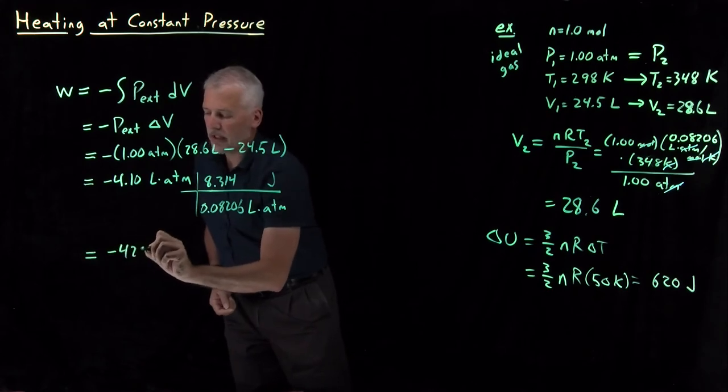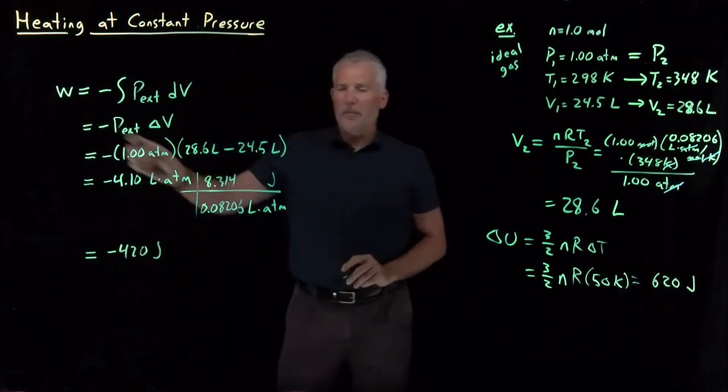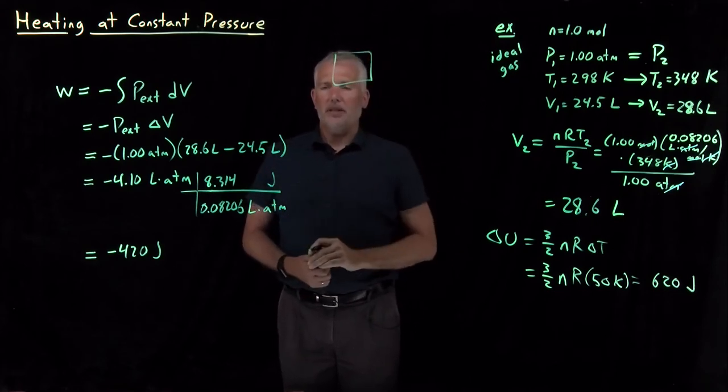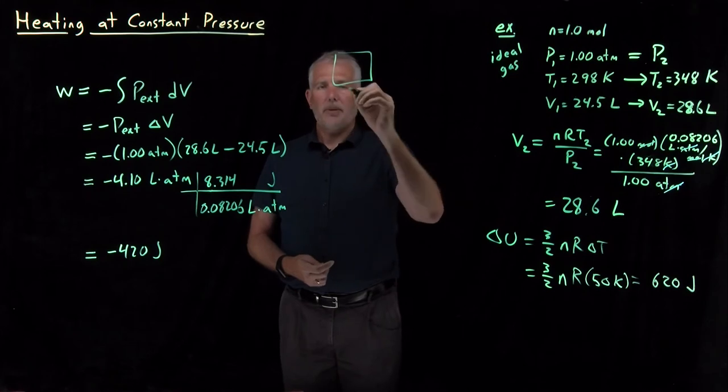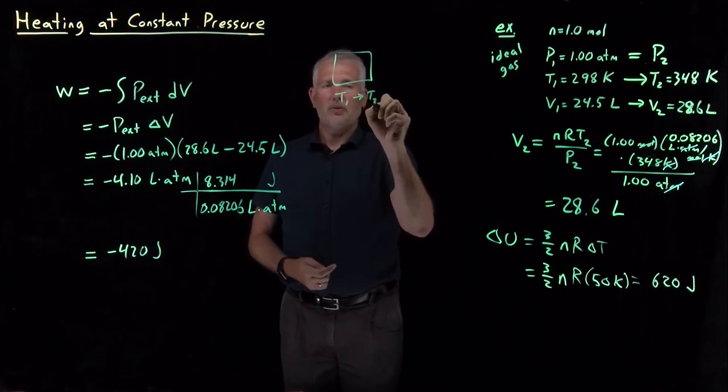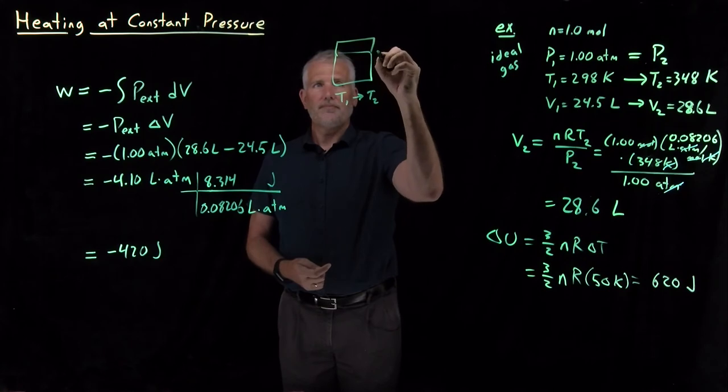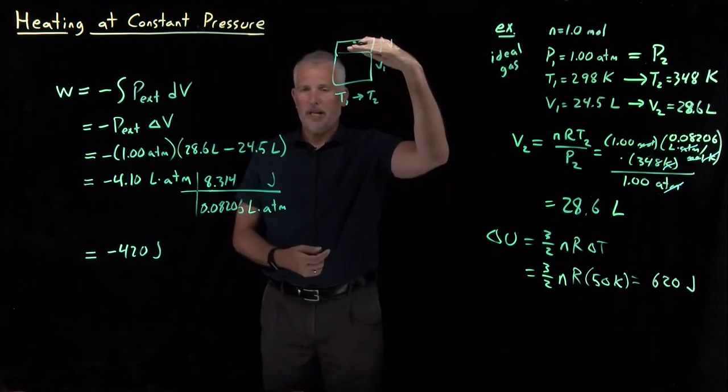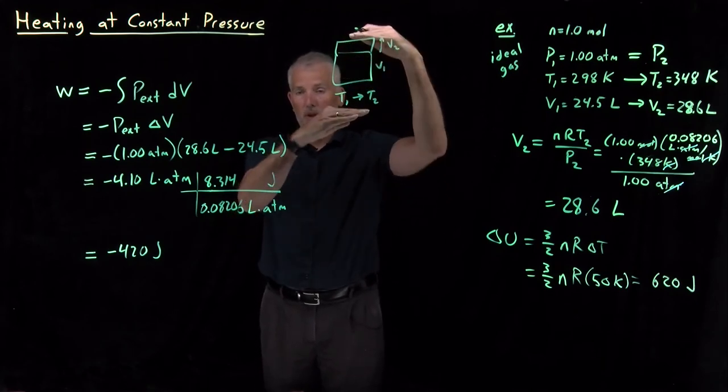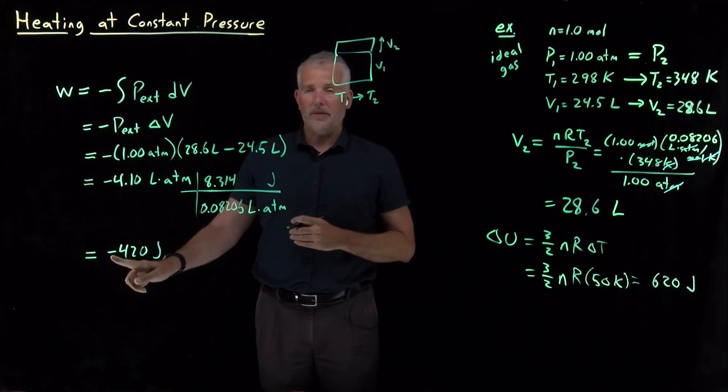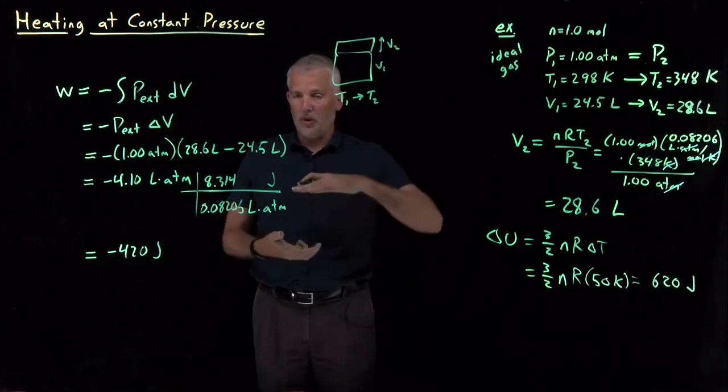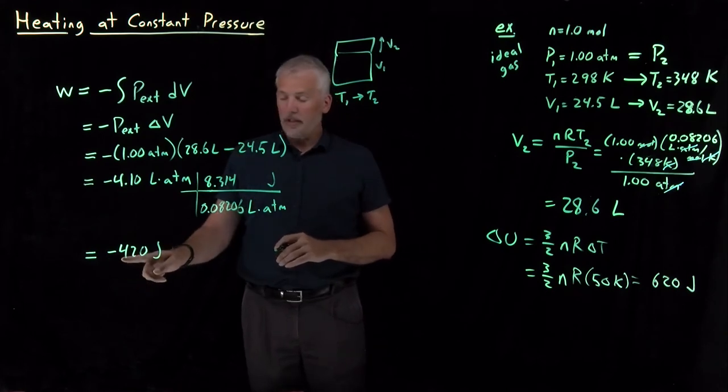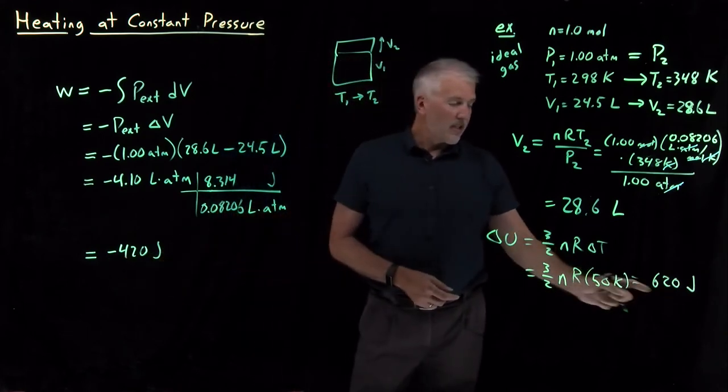Notice what's happening. I've got my box of gas. By keeping the pressure constant as I increase it from T₁ to T₂, the volume increases from V₁ to V₂. In the process of changing the volume, it has to do some work—the system does some work by expanding. So the work has a negative sign, and it does 420 joules worth of work in pushing back the walls of the container. Notice that that's pretty significant—it's almost as big as the size of ΔU.